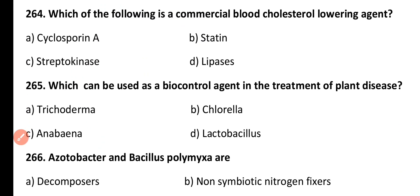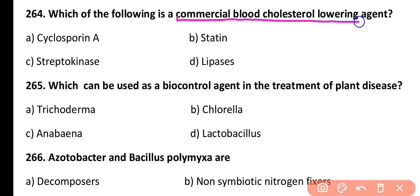Question 264. Which of the following is a commercial blood cholesterol-lowering agent? Cyclosporin A, Statin, Streptokinase, or Lipases. Correct answer is Option B. Statin is a commercial blood cholesterol-lowering agent, for example lovastatin.